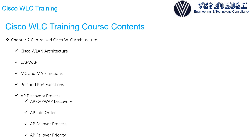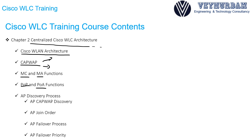In chapter 2 we will go over centralized Cisco wireless LAN controller architecture — how Cisco wireless LAN architecture operates, what CAPWAP tunnels are, how CAPWAP tunnels operate, and what the two different types of CAPWAP tunnels are. We'll cover MC and MA functions for wireless LAN architecture, point of presence and point of attachment functions. Then we will go over the access point discovery process and how access points know which wireless LAN controller to join, followed by the access point failover process and how we can prioritize failover.